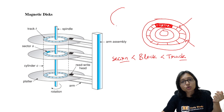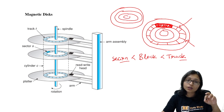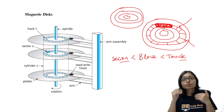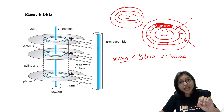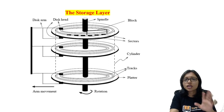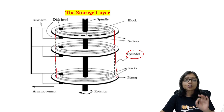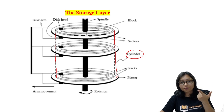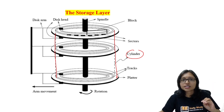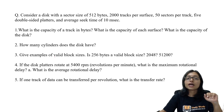The total circle is the surface. Surface is the collection of some tracks. When you are calculating the surface size, you first have to calculate the track size, because a track is a collection of some sectors. And what is a cylinder? A cylinder is the collection of tracks — meaning how many tracks are there in total in the storage; that is called the cylinder.